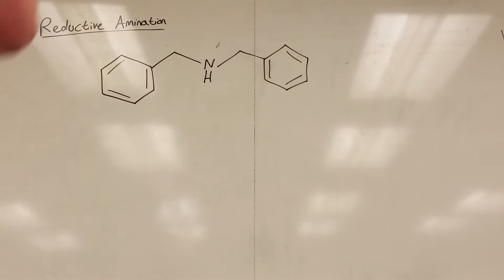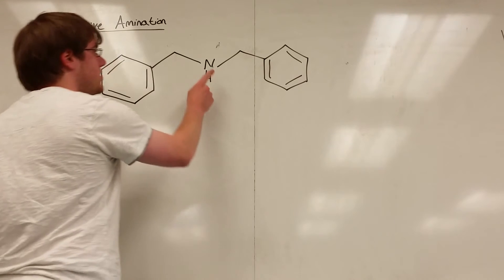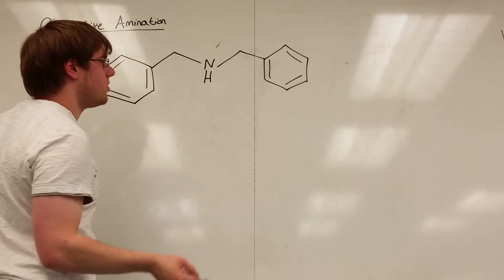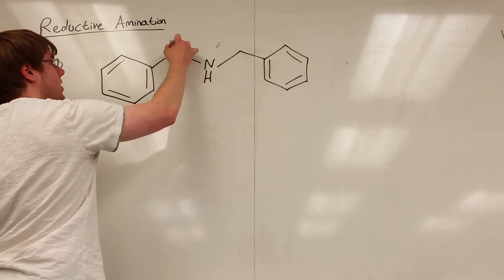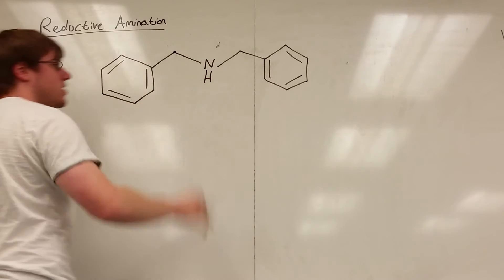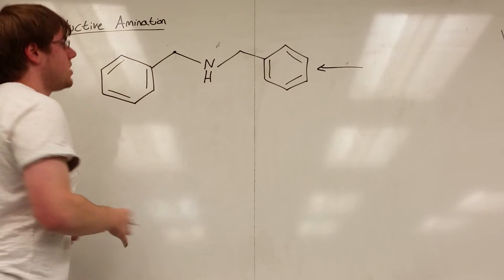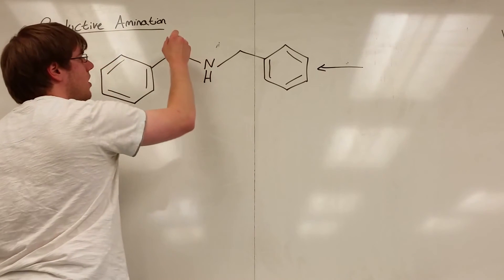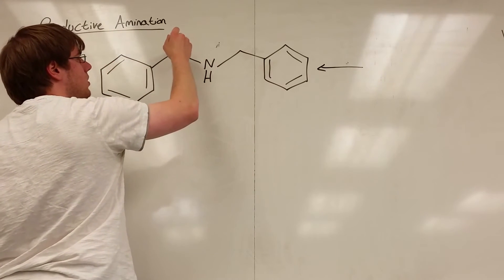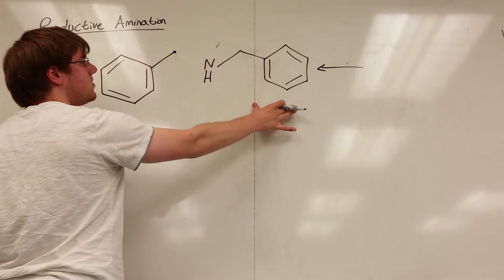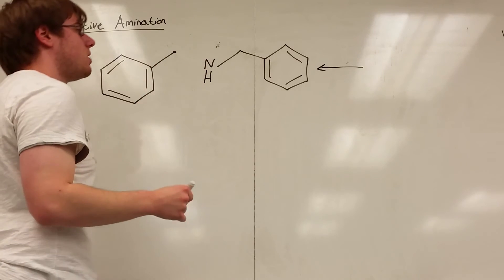Number three, we needed to make this structure from structures containing four carbons or less and benzene. So once again, we're going to start with our reductive amination, because I see a nitrogen single bonded to carbons. Now since this is symmetric, I can choose the left or the right side. It doesn't really matter which. I'm going to do the left side. So this is my carbon that's attached to the nitrogen. So when I split this apart, I have a decently large thing coming off of this, right? Because I'd have this carbon. I'd be erasing this bond until this would be an NH2, this would be one piece, and this would be the other with a C double bond O.